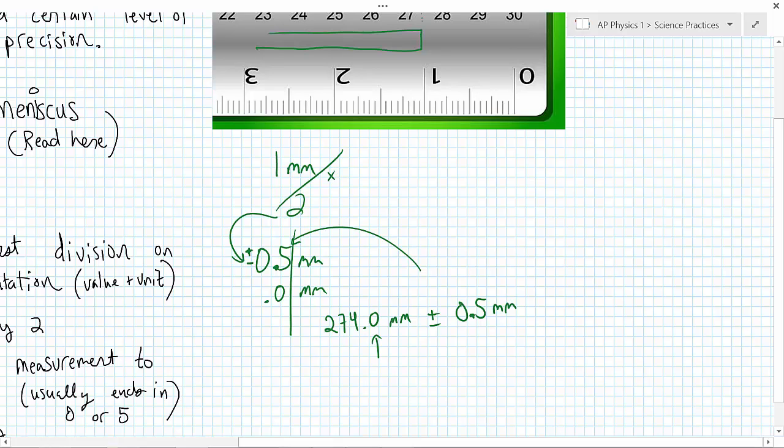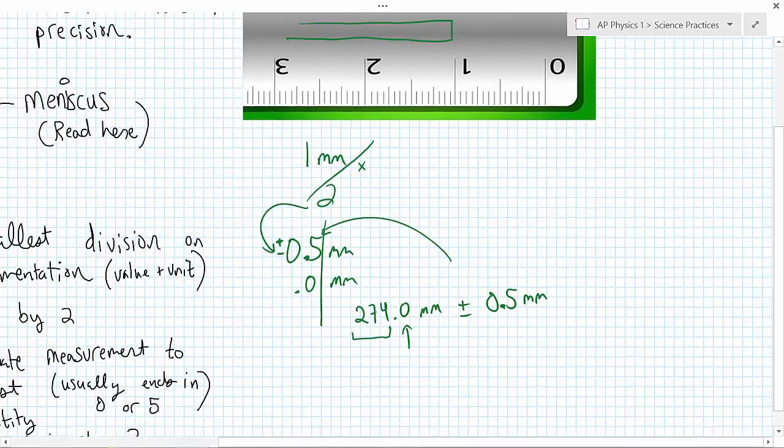Remember, that's our uncertain digit. I know for sure that it's at least 274, and that last one represents the uncertain digit, or the one that as a measurer, you make a guess on. That's the one that's uncertain.